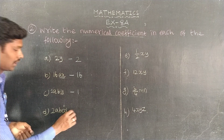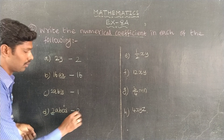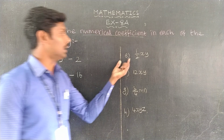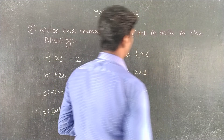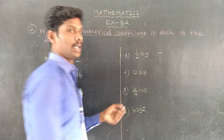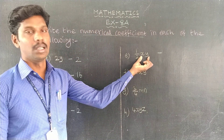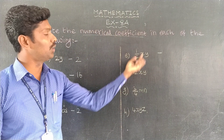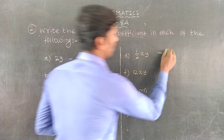2abcd — this is a numerical coefficient: 2. Next, 1/2 xy — this is a numerical coefficient: 1/2.